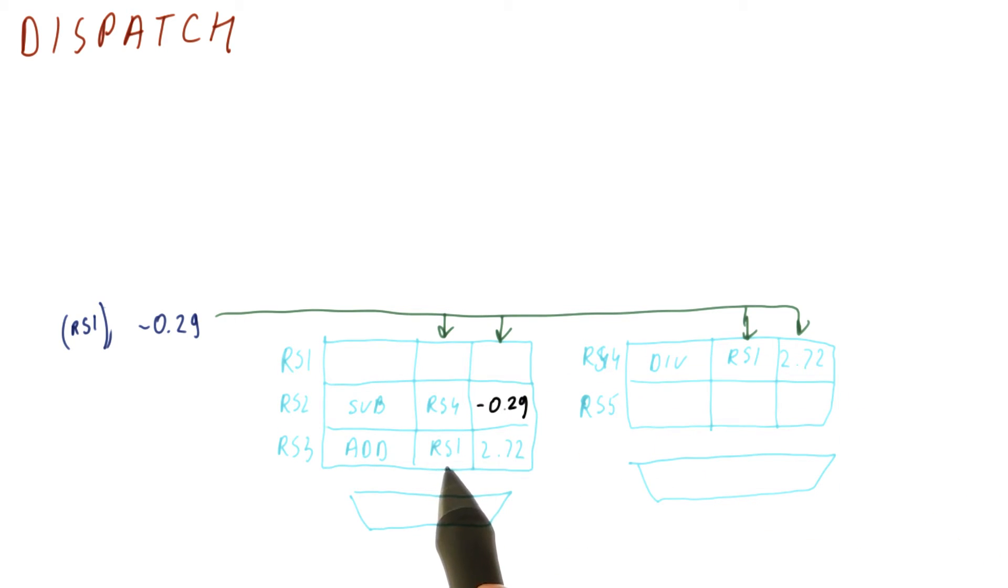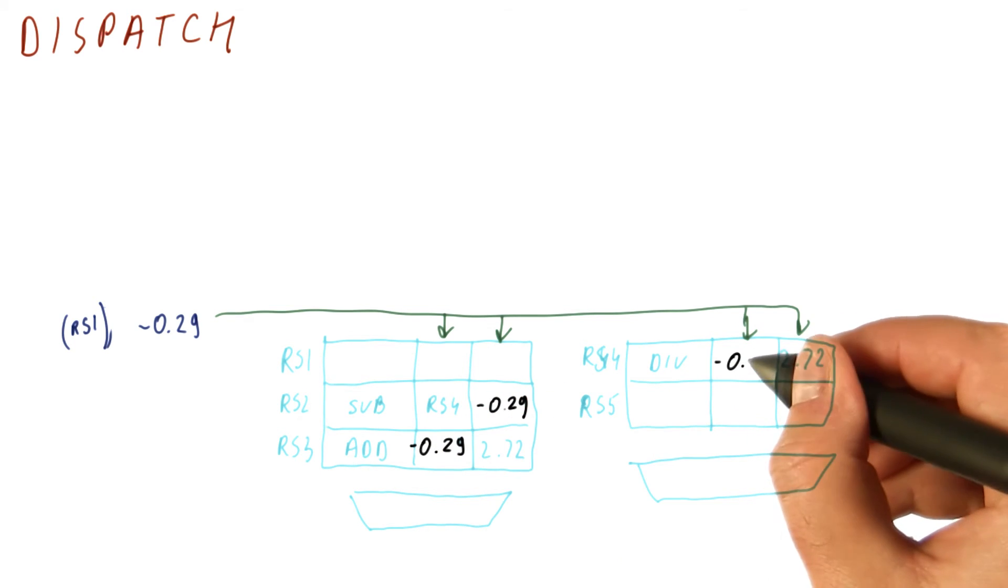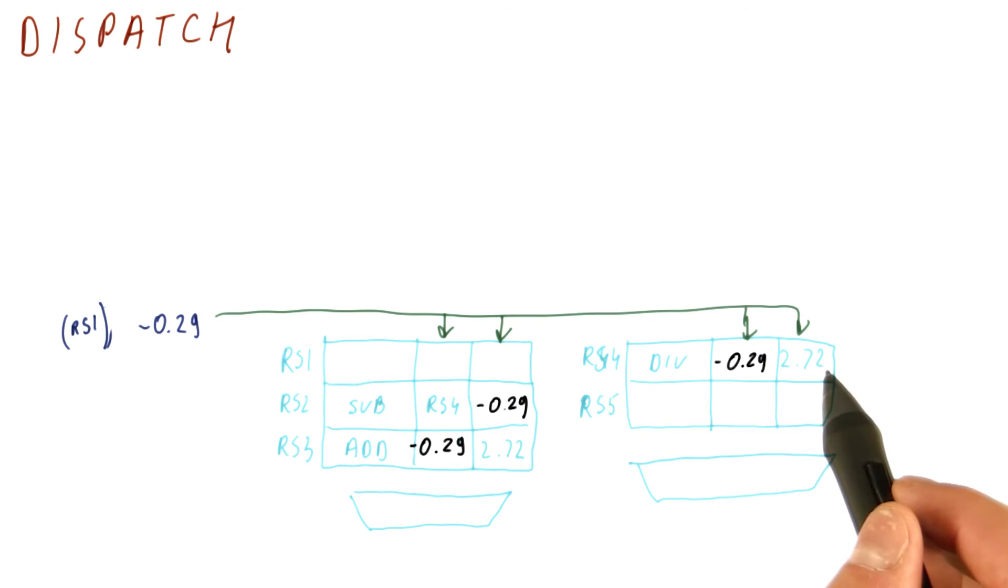For this instruction it already has a value here so we don't have to match anything. But RS1 here does match so we're going to take the value of 0.29. And here we have another match, this is minus 0.29, and this value is already here.